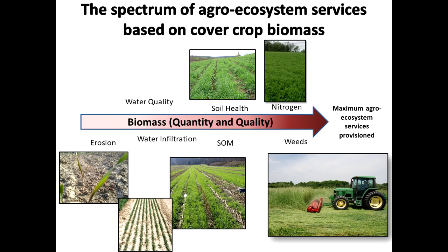First, I think it's important to identify what we're trying to do with cover crops and where we're going. This is a qualitative schematic of what can be achieved as you increase your biomass — both quality and quantity. This continuum applies across the board. Very small cover crops provide some erosion advantage, but if we start targeting other services, we have to push the performance of the cover crop.